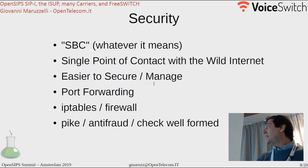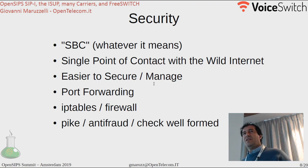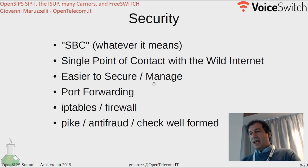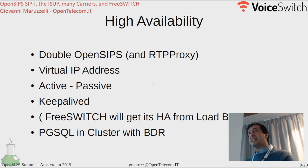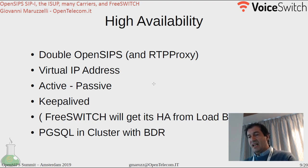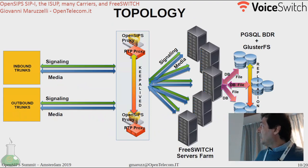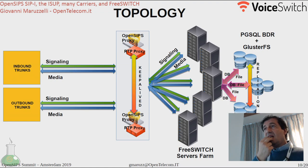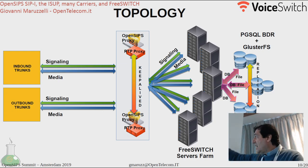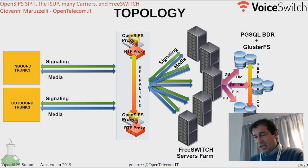Security is handled using all the features of OpenSIPS, which is the only point of contact with the open internet. For availability, we duplicated the front end in active-passive, with clusters for the file system and database, and a load-balanced FreeSwitch farm. Key parts move services between the active-passive OpenSIPS instances and the rest of the infrastructure. The presentation will be available on the website.